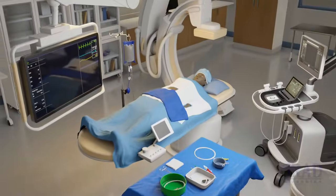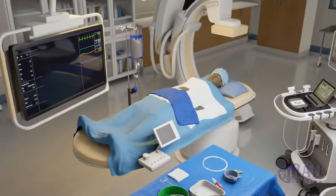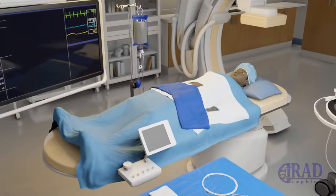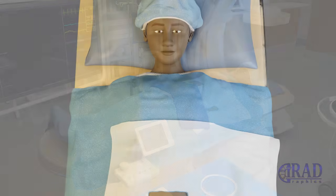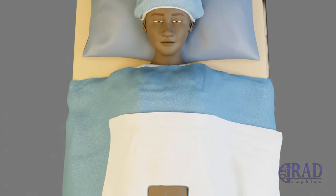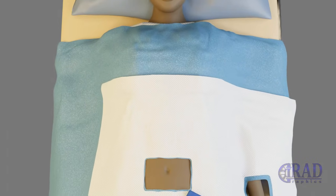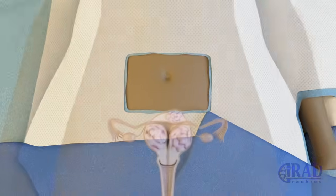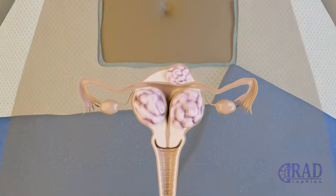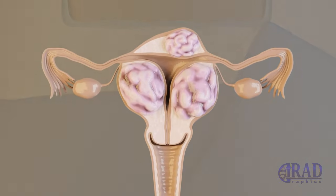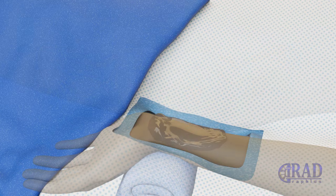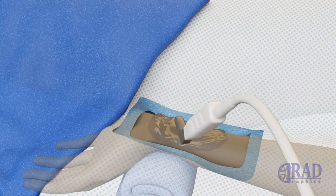This animation demonstrates how one of the most popular minimally invasive procedures, uterine fibroid embolization, is performed step by step through a radial access. This procedure is commonly done by interventional radiologists.